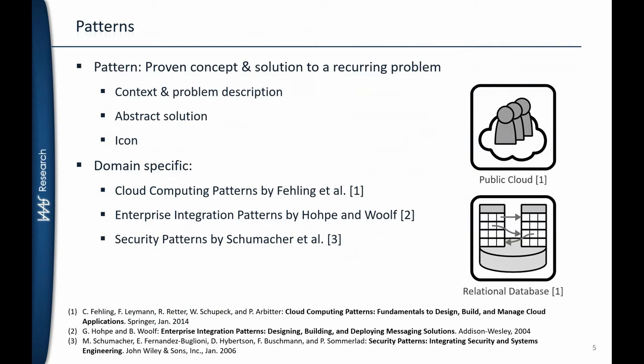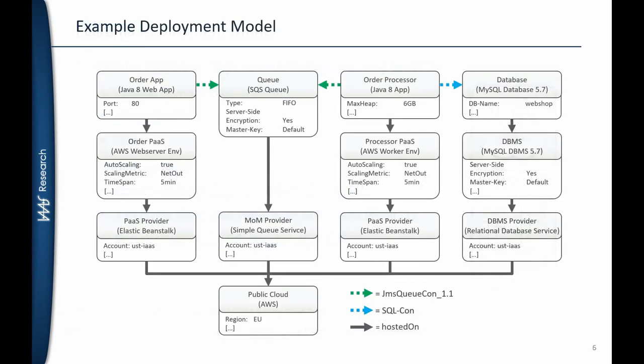So how do patterns help in deployment models? Considering the example deployment model from before — there is a public cloud pattern defined by Fehling which describes how different resources can be shared among different customers. Why don't we just replace this concrete public cloud component at the bottom with the public cloud pattern? So we are simply inserting the public cloud pattern instead of the concrete component.